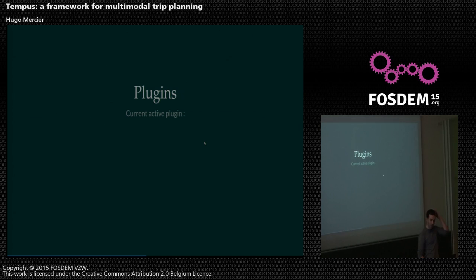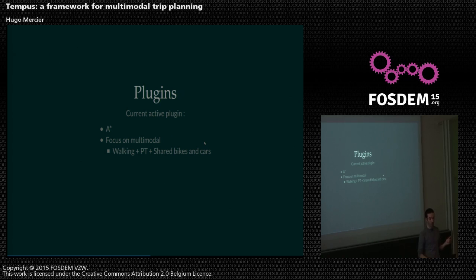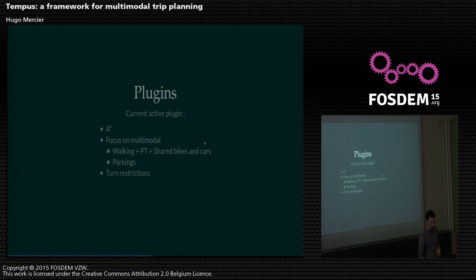The main current active plugin uses A* as its algorithm, but we've focused on multimodal capabilities. We can already mix different transport modes — walking, public transport, shared bikes, shared cars — and handle parkings, for instance when you want to park your car before arriving at destination. We also handle turn restrictions and, more recently, daily speed profiles. If you have traffic data on road edges, the engine can take them into account.